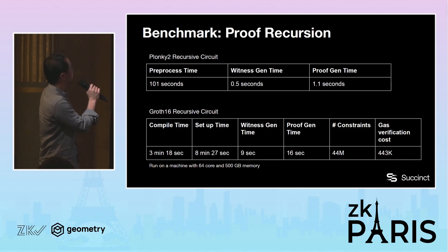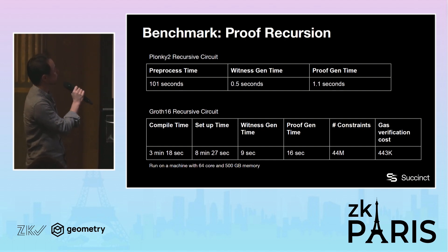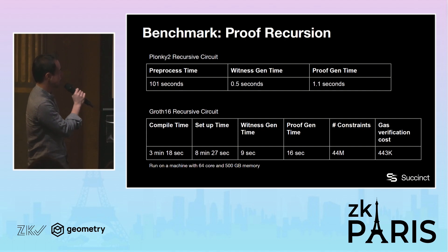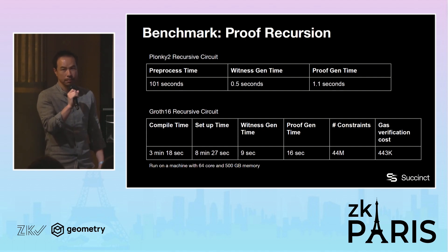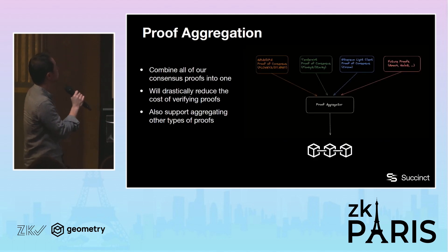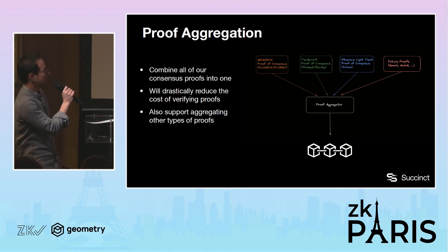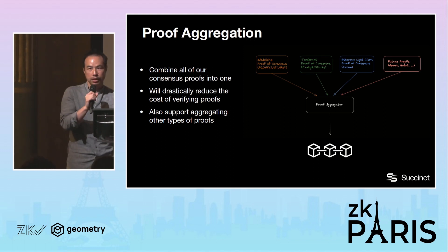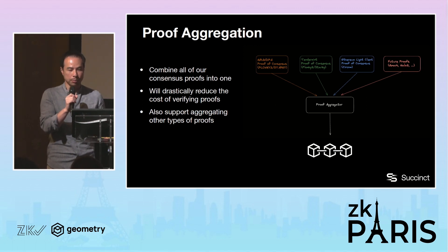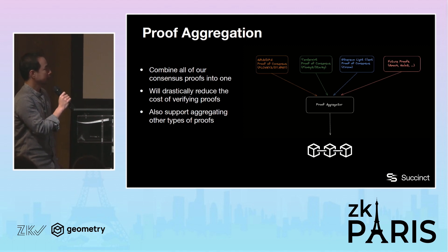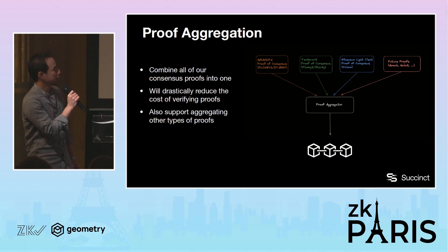Here's some benchmarking. For the Plonky2 recursive circuit, we were able to get that to about 1.5 seconds with key gen plus proof gen. For the Groth16 recursive circuit, we are getting speeds of about 25 seconds for key gen plus proof gen. We also plan to aggregate proofs for many different consensus protocols into one proof, so that when we verify them on the EVM it will be much cheaper. Normally it's around 300K gas to verify one proof, but aggregating many proofs gives us a nice amortized effect.